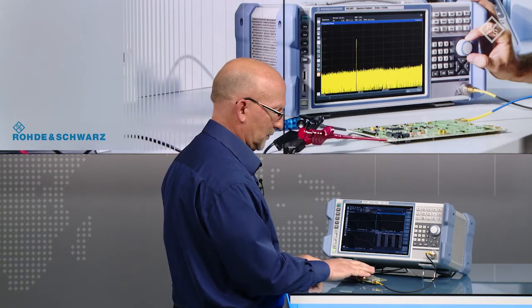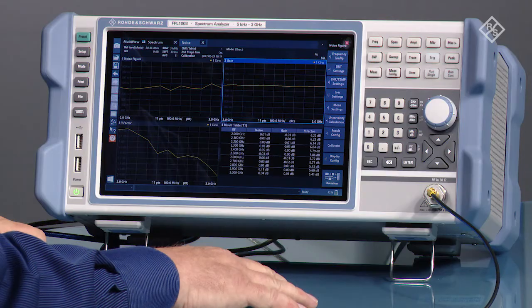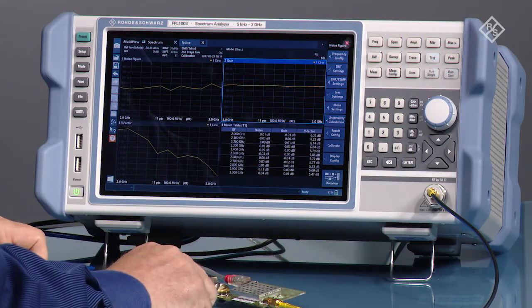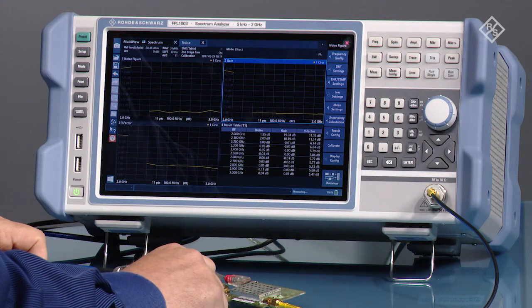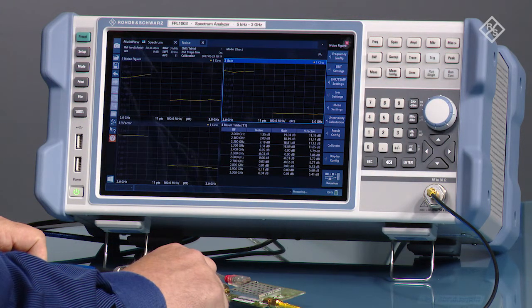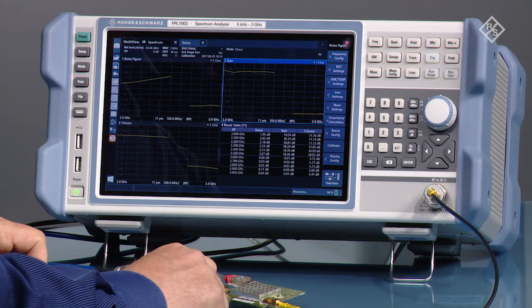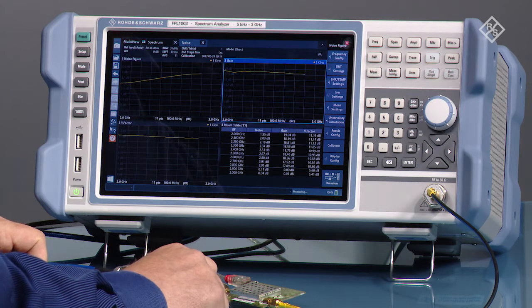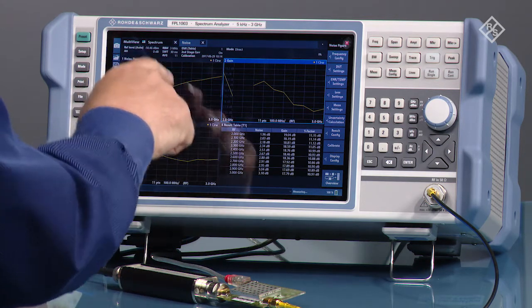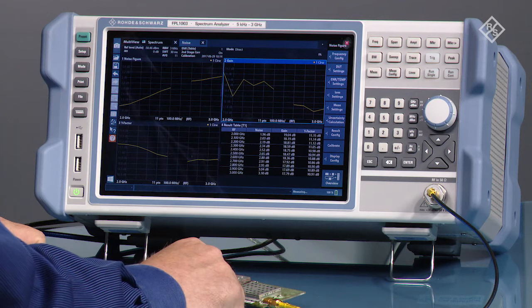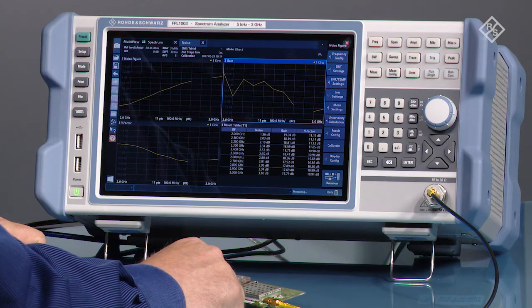We've connected our noise source up to the device under test and the output of the device under test up to the spectrum analyzer. Now we're going to start making a measurement by selecting run continuous. Here we see that we have a noise figure between 2 and 3 and gain somewhere around 18 dB. We've made a noise figure measurement.